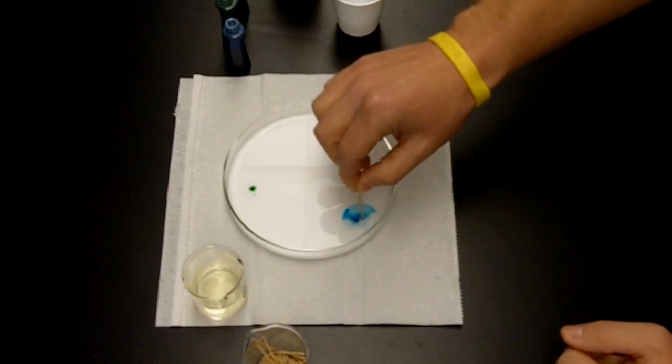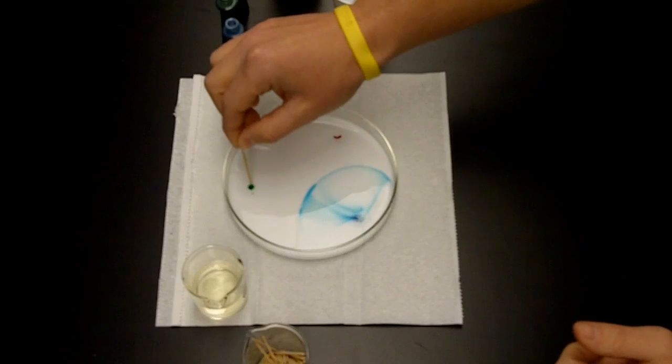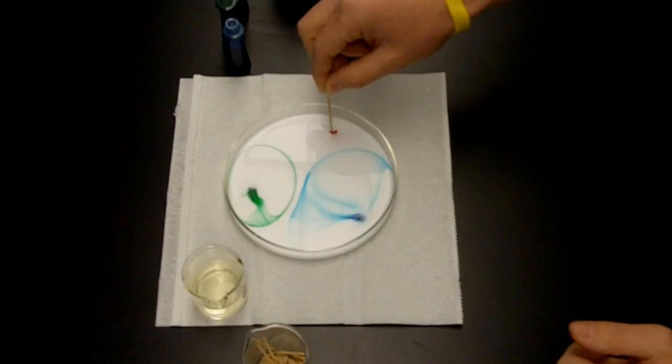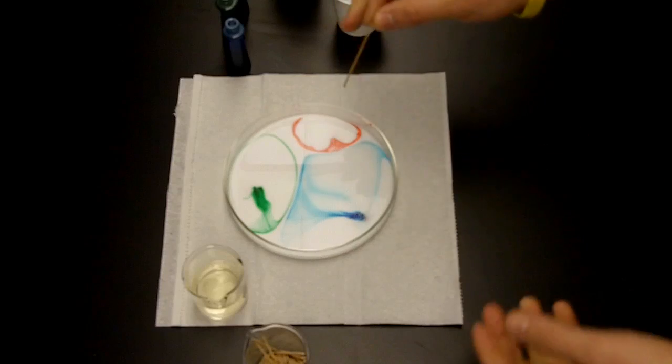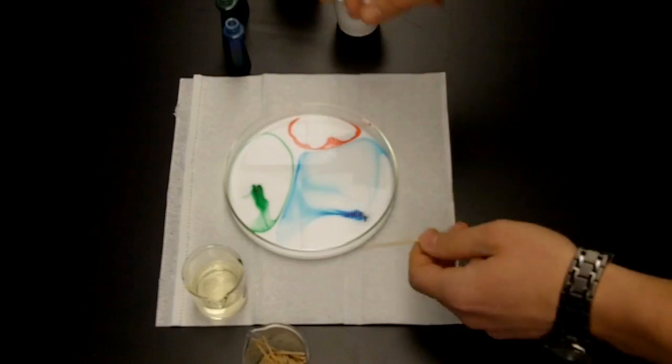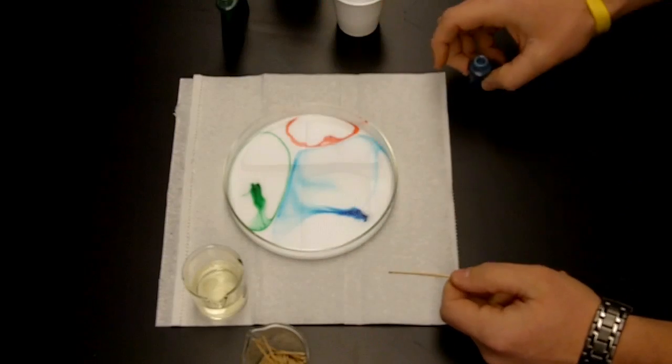We're going to touch the toothpick at the places where we dropped the food coloring, and as you can see, the food coloring expands very rapidly away from the toothpick.